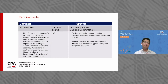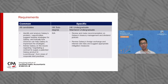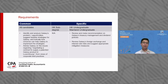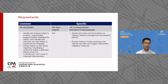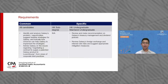For the requirements, all candidates must identify and analyze Galaxy's problems and opportunities, suggest feasible strategies, and indicate how Universe can help Galaxy implement those strategies. You also need to advise Galaxy on a specific issue: negotiating a contract to supply a patented Galaxy product in Leesonburg, from the view of corporate best practice. The candidate has to think deeply about that requirement.